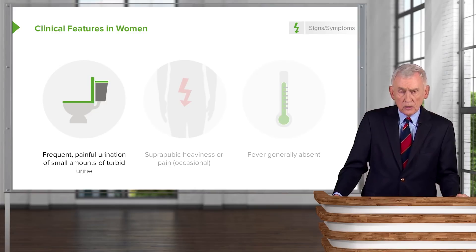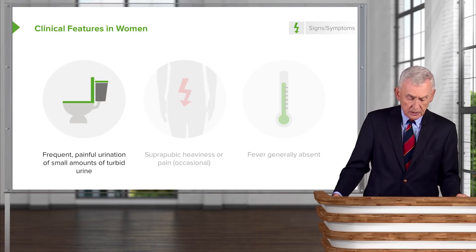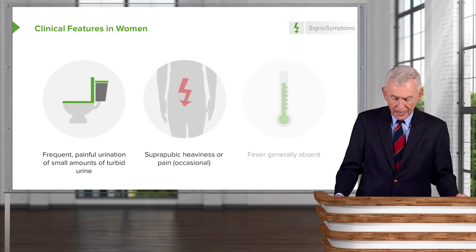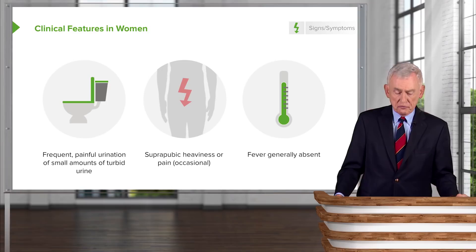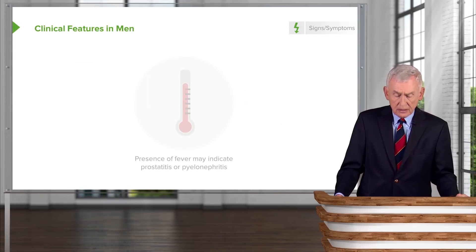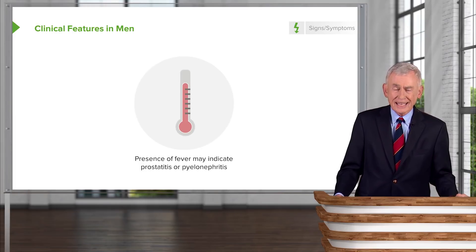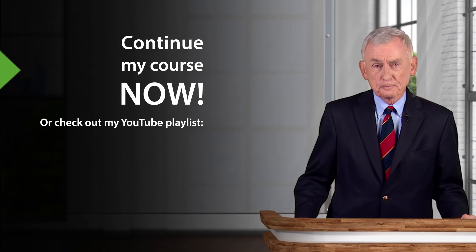In women, almost all have frequent, painful urination of small amounts of turbid urine. They may also have suprapubic pain or heaviness, and they usually do not have fever. In men, they have some of the same symptoms, but if they have fever, it may indicate a focus in the prostate gland or worse, a kidney infection — pyelonephritis.